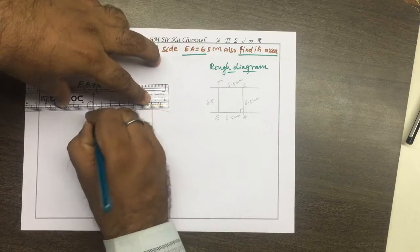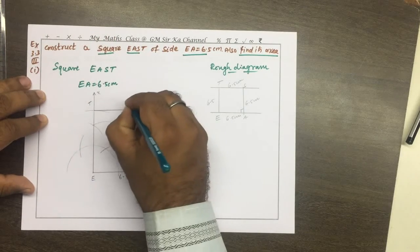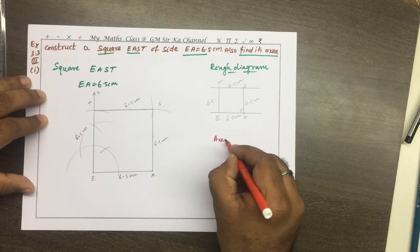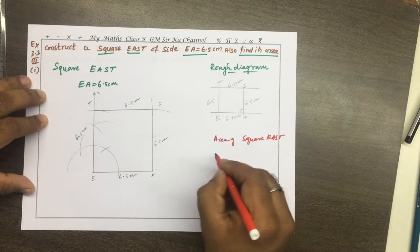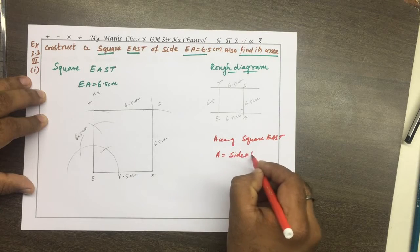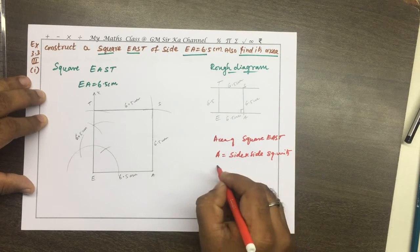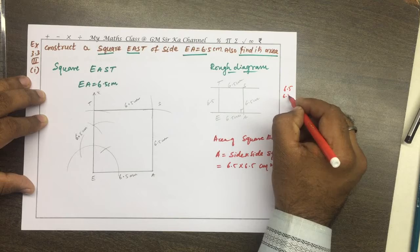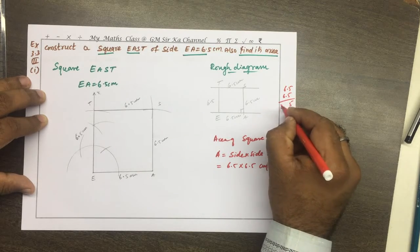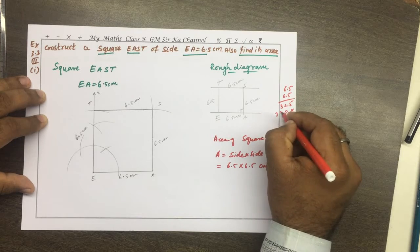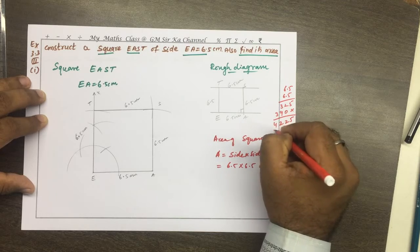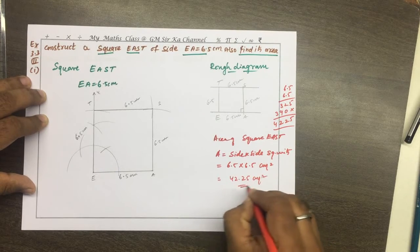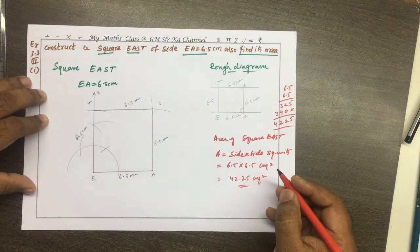All sides of EAST are 6.5 centimeters and all sides are equal. Area of square EAST is equal to side × side square units: 6.5 × 6.5 = 42.25 centimeter square. That is it for this type of problem.